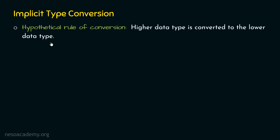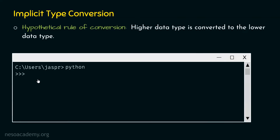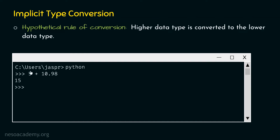Let's see what happens when this hypothetical rule is followed. We again type 5 plus 10.98. Under this hypothetical rule — higher data type converted to lower — we would get 15 as a result, not 15.98. Please note: if you actually run this command, you will get 15.98, because Python always follows its actual rule of conversion.